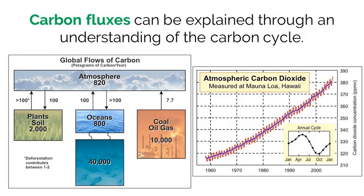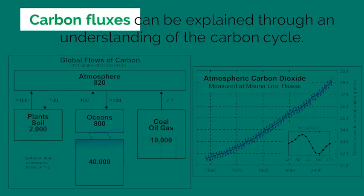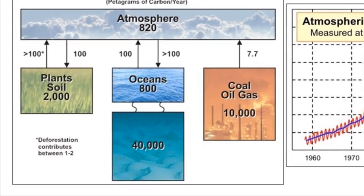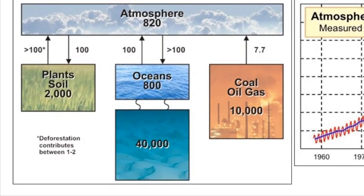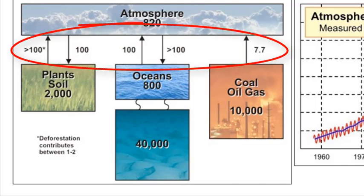With an understanding of the carbon cycle, scientists can estimate how much carbon is transferred to various sinks and reservoirs each year. They calculate this rate of change by looking at what processes in the carbon cycle take in and store carbon, and compare them to the processes that release carbon.